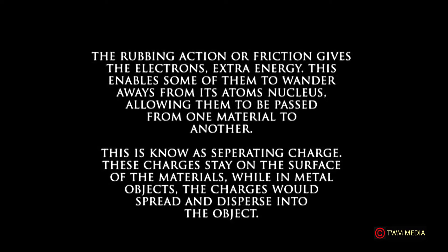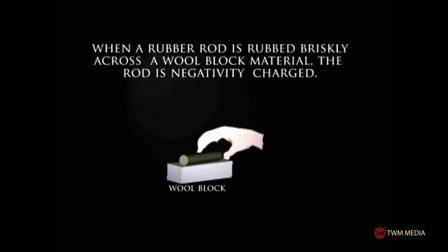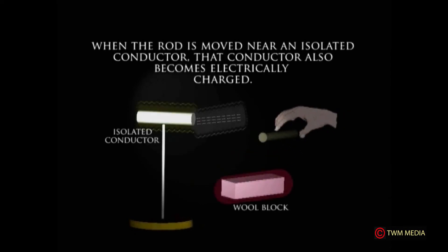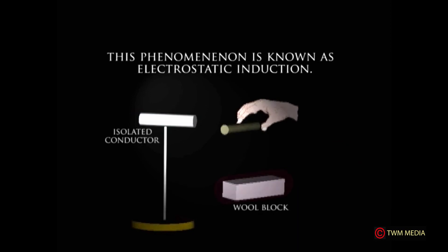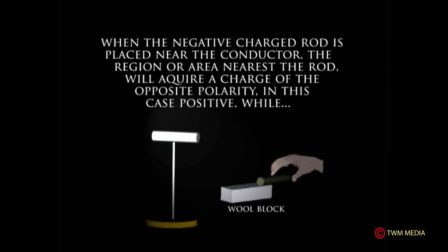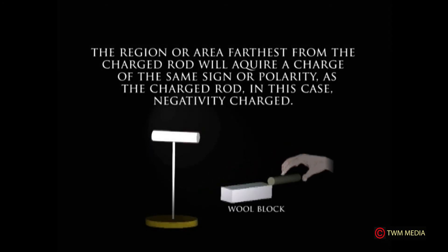In metal objects, the charges would spread and disperse into the object. Experiments led to observations regarding the behavior of electric charges. When a rubber rod is rubbed briskly across a wool block, the rod becomes negatively charged. When moved near an isolated conductor, that conductor also becomes electrically charged — a phenomenon known as electrostatic induction. The region nearest the rod acquires a charge of opposite polarity (positive), while the region farthest from the rod acquires a charge of the same polarity (negative).